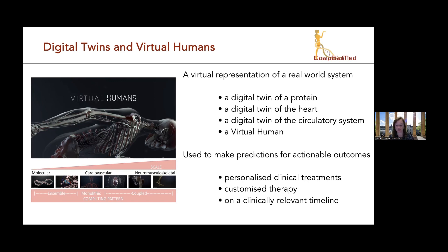The really important part of a virtual human or a digital twin for healthcare is that it has to be used to make predictions for actionable outcomes. Because this is healthcare, an actionable outcome relates to health and well-being — something like a personalized clinical treatment or a customized therapy, done on a clinically relevant timeline. It needs uncertainty quantification built into it, and most importantly, it needs the person built into it. This is why it can't be wholly AI-based, because we are all different as individuals.